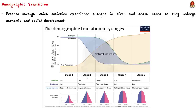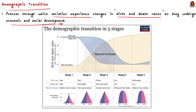To understand this article better, you need to first understand the concept of demographic transition theory. Demographic transition theory explains the process through which each society experiences change in birth and death rates when they undergo economic and social development. This theory says that countries go through distinct stages of demographic changes as they progress, helping us understand how population changes over time. It has five stages, each representing a different pattern of birth rates and death rates.